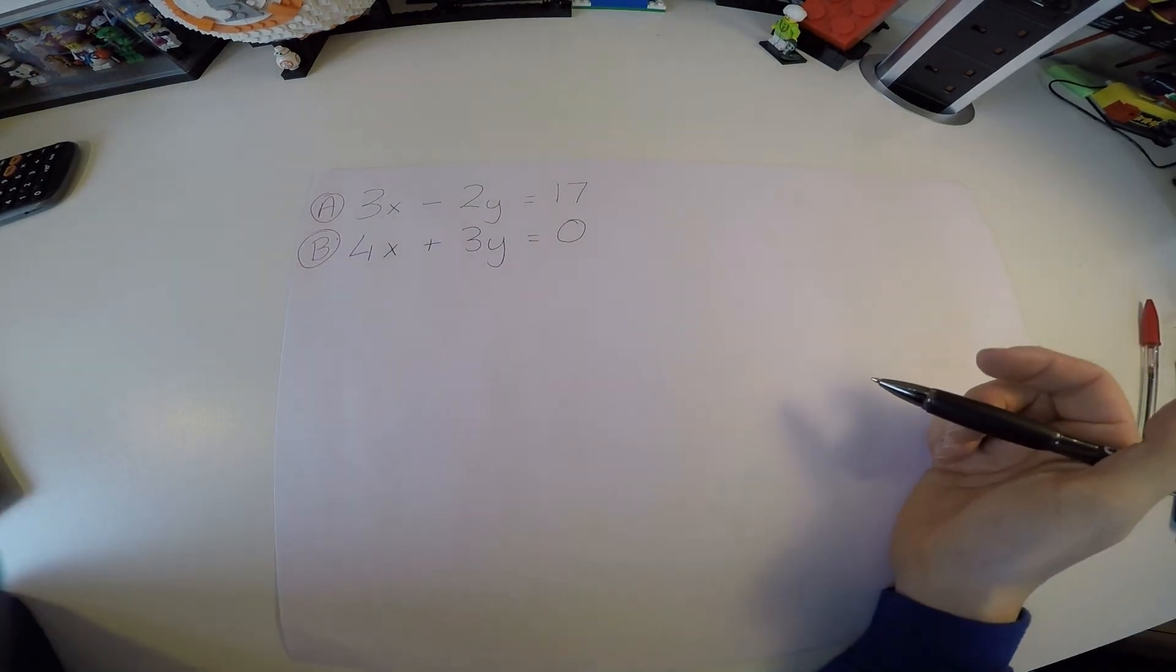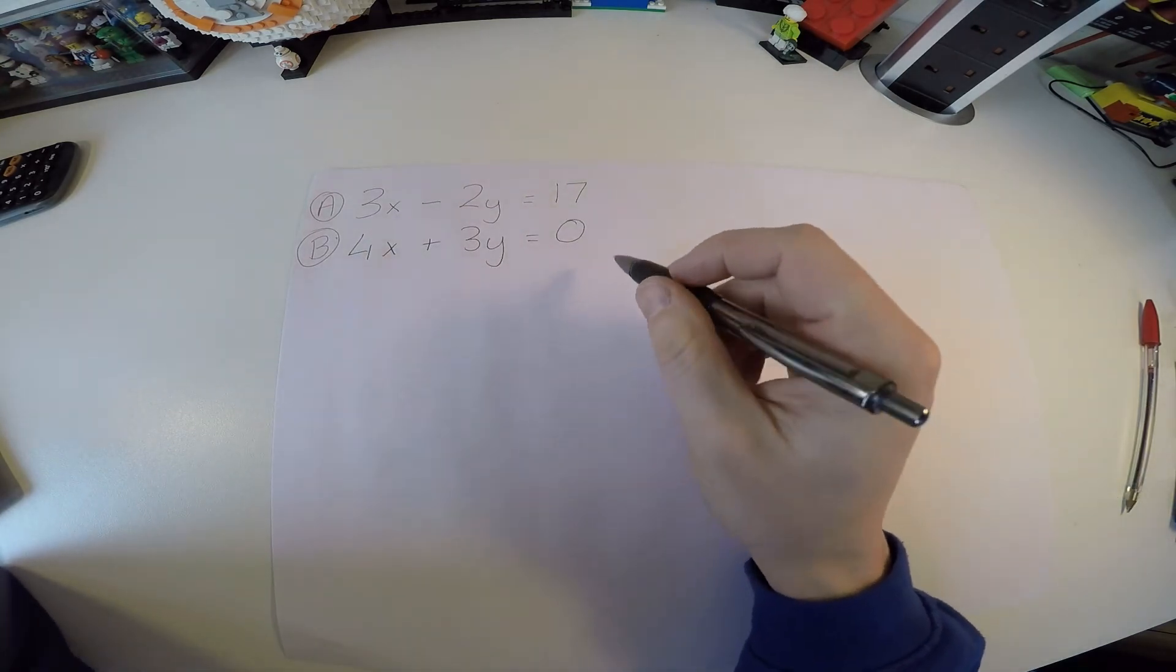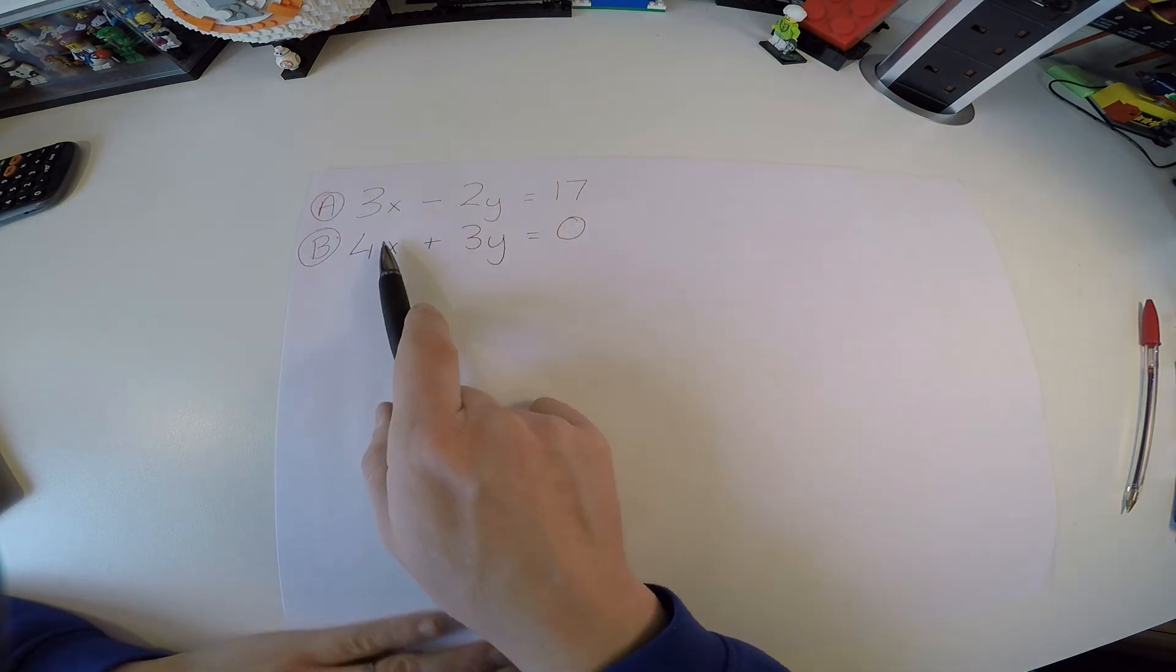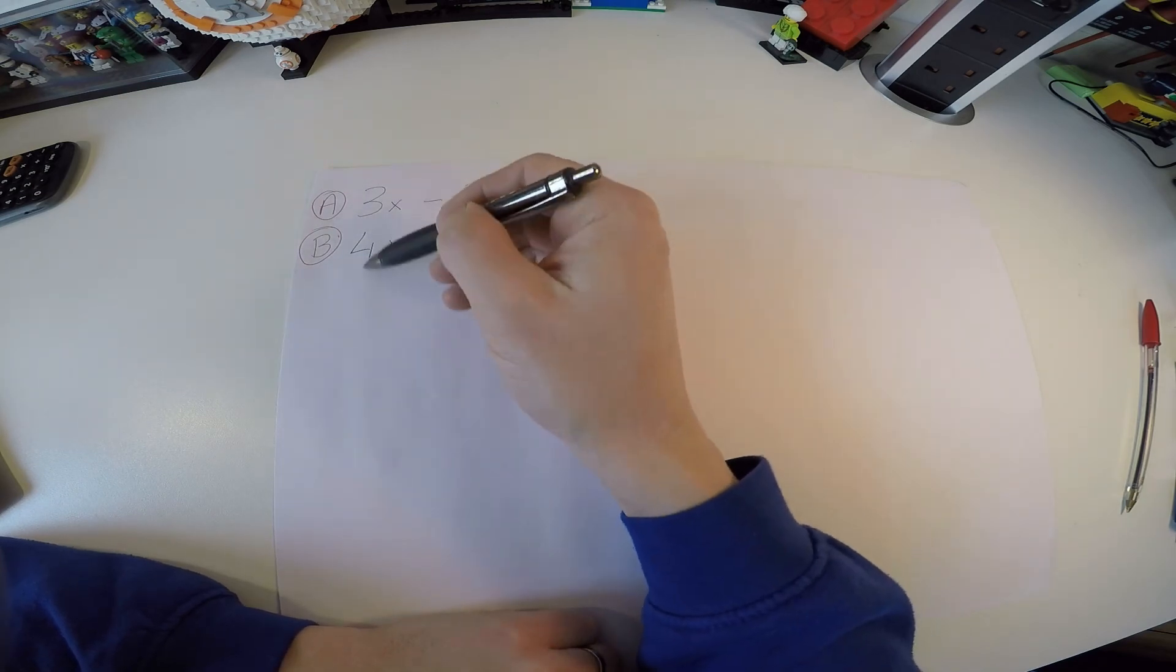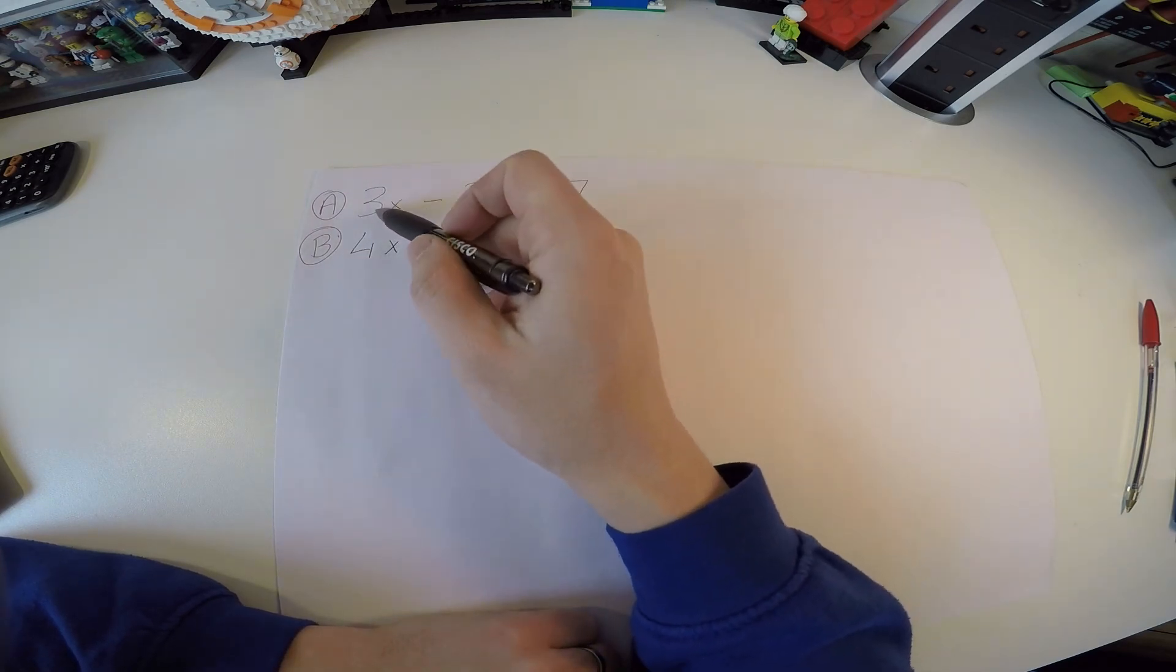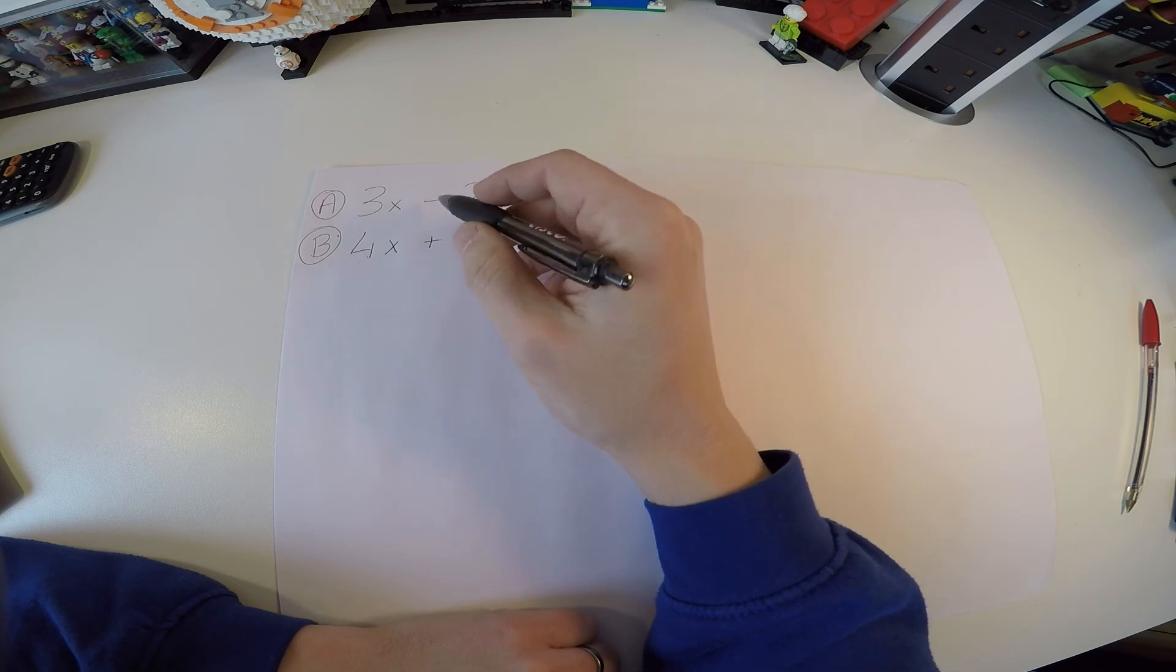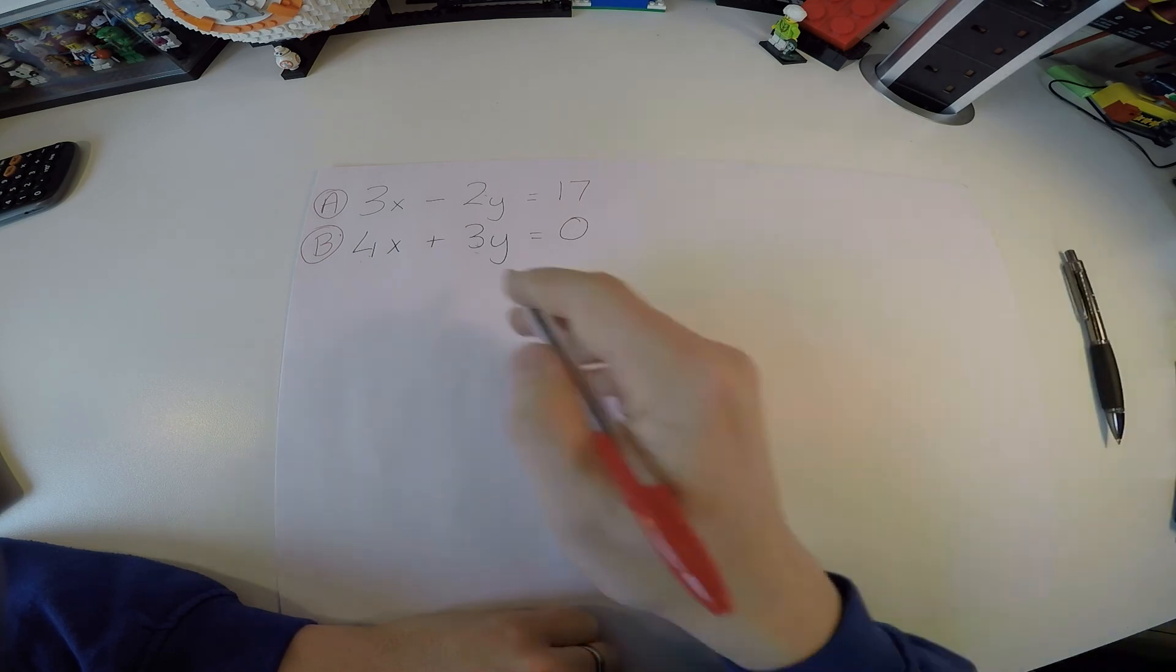Just one final example, just in case you're practicing some of these and you get something like this. So what I've shown you so far, we just have to multiply in one line to match up a coefficient. But we can kind of see here that once we get to here, there's actually nothing we can do. If we multiply, what can multiply 3 by to get 4, nothing. And similarly, 4 to get to 3 or 2, minus 2 to get to 3 or vice versa. So what we actually have to do here is multiply both equations. So what I want you to do for these type of ones is this: pick one coefficient.